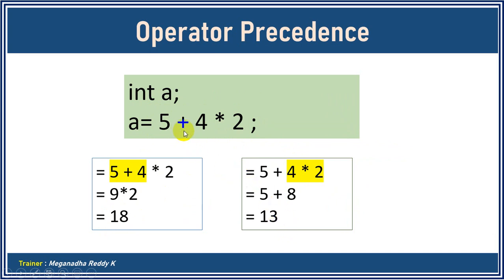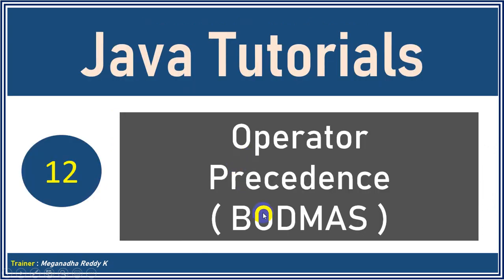So in this case we have plus and star, and we need to know which has the highest precedence when an expression has multiple operators. We have a shortcut to remember called BODMAS — B-O-D-M-A-S — which stands for Brackets, Orders, Division, Multiplication, Addition, and Subtraction.